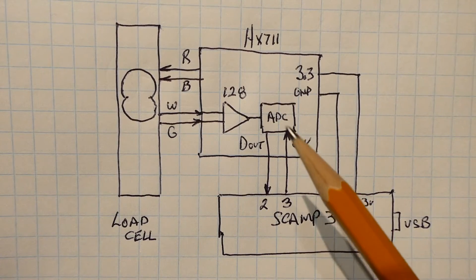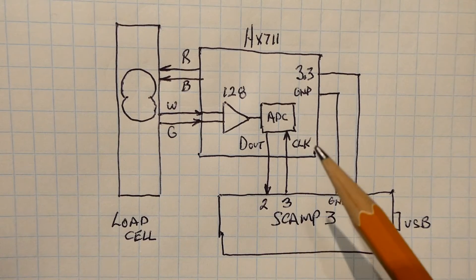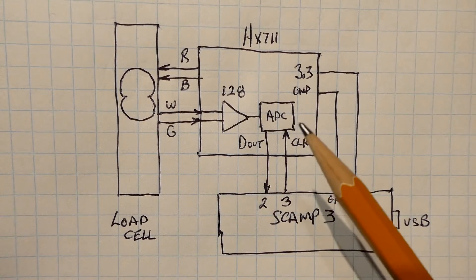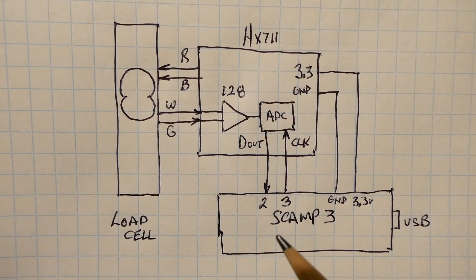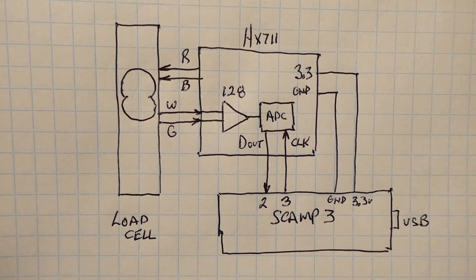Now every clock pulse we're going to get one bit out of the D out. So after 24 clock pulses into the ADC we're going to get a 24-bit word into the SCAMP3 board and that's going to be our load cell data.